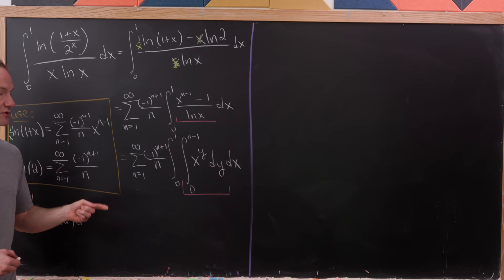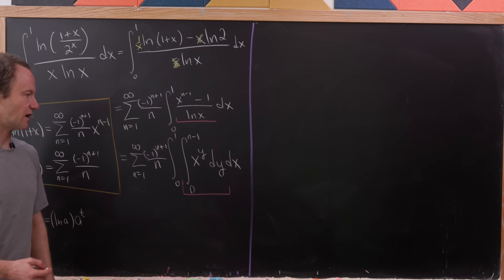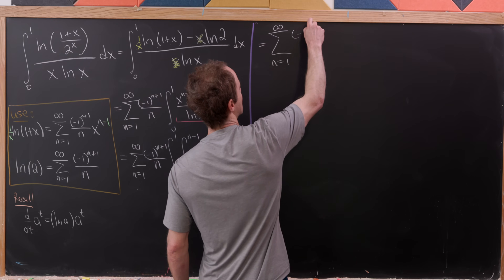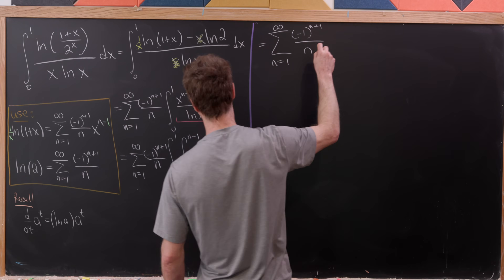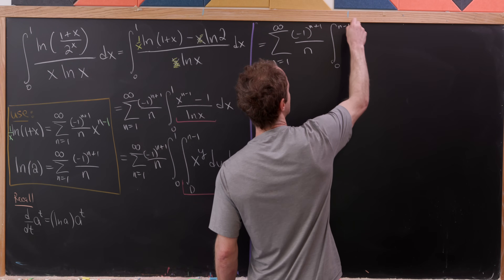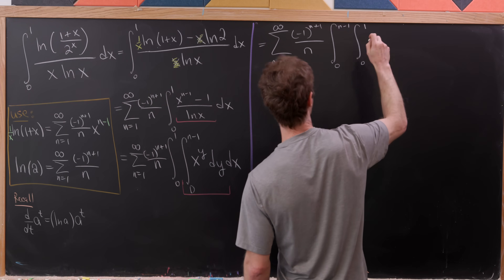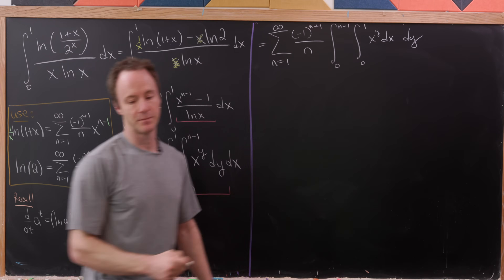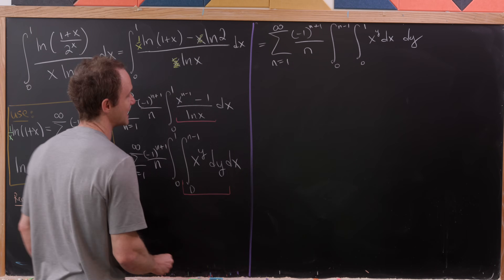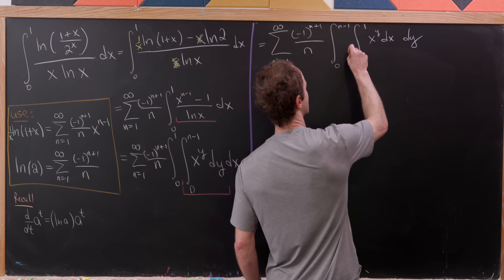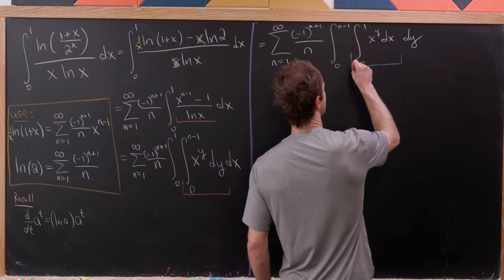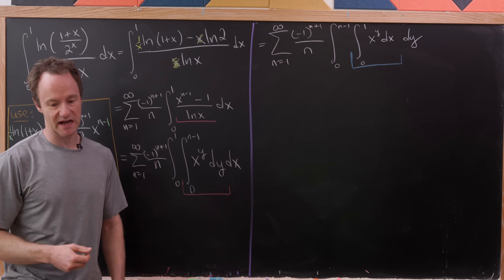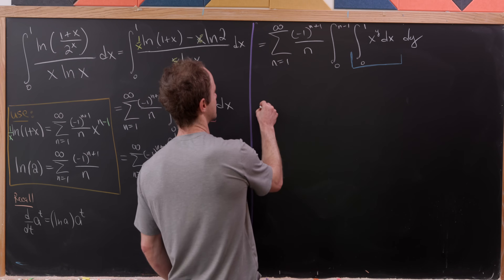Now we use Fubini's theorem to change the order of integration. We still have the sum from n=1 to infinity of (-1)^(n+1) / n, and now we have the integral from 0 to n−1, and then the integral from 0 to 1 of x^y dx dy. The inner integral is straightforward because x is the variable of integration, so we can simply use the power rule — increase the exponent by 1 and divide by the new exponent.